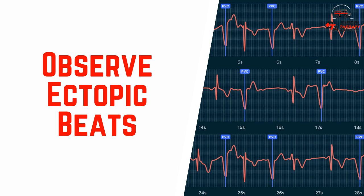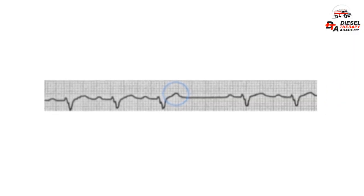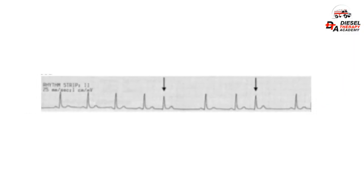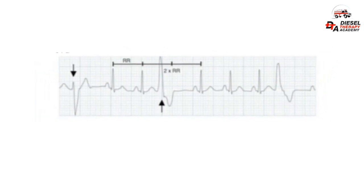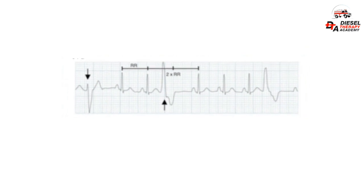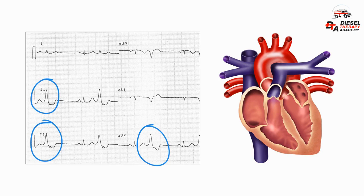How to identify ectopic beats: ectopic heartbeats are deviations from the usual rhythm of the heart, and should be closely monitored by EMS staff. Premature atrial contractions (PAC), early junctional contractions (PJC), or premature ventricular contractions (PVCs) should all be closely monitored. Note how many ectopic beats are present in an ECG, their interval of occurrence, shape, and if they appear in groups or solitary patterns.